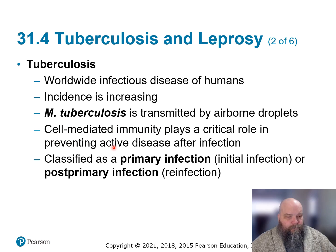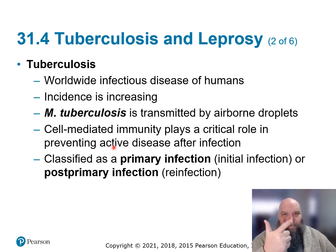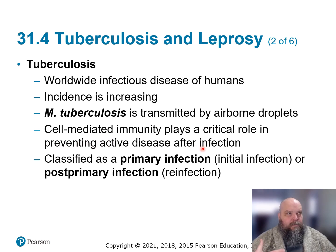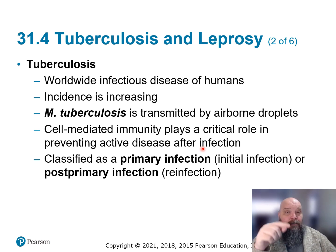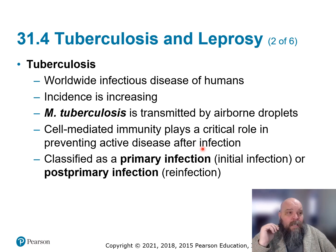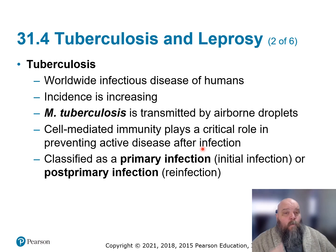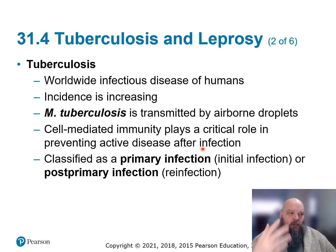Cell-mediated immunity — macrophages, monocytes, B cells, T cells, innate and adaptive — plays a role not only in preventing but also in exacerbating the disease. It turns out Mycobacterium tuberculosis is one of those bacteria that prefers to be inside one of our cells. It's not an obligate intracellular parasite, but once it gets phagocytized, it hijacks the macrophage or neutrophil. The best place to hide is inside the immune cells that are supposed to get rid of you. One becomes two, becomes four — it's a slow grower.